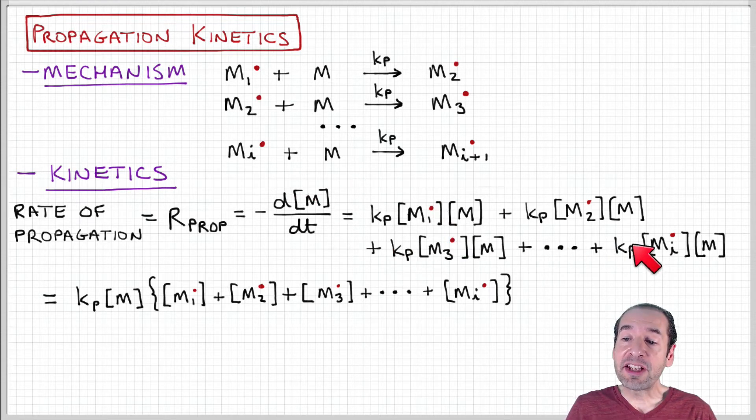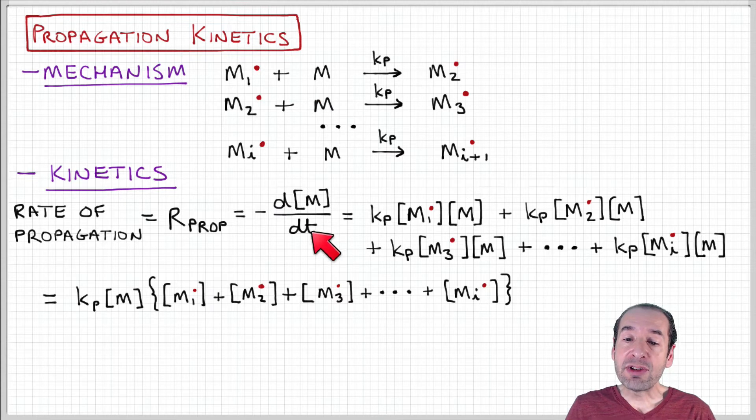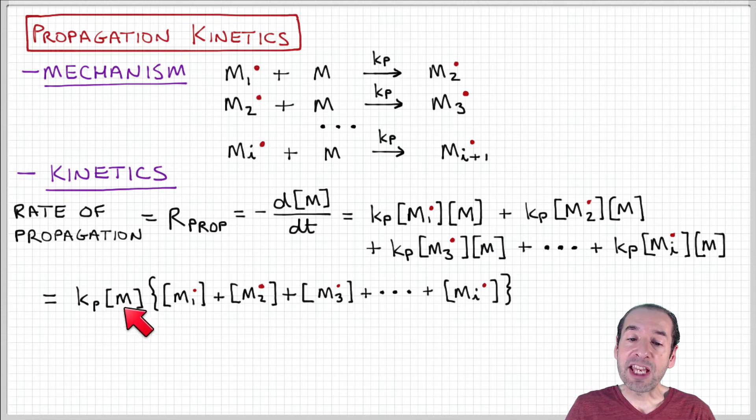The sum of all these processes can be related to the rate of consumption of monomer M. When we write the expression this way, we can factor out the product of the rate constant for propagation and the monomer concentration.